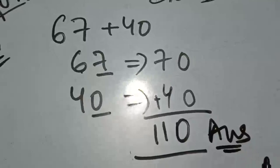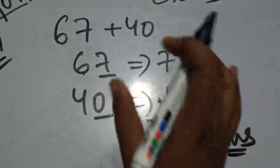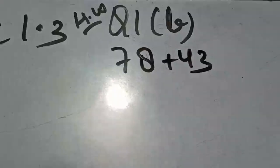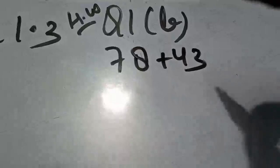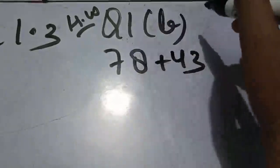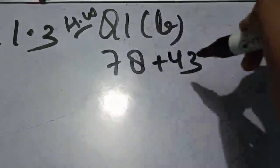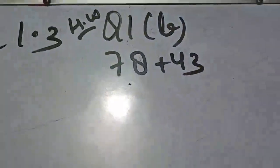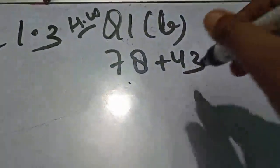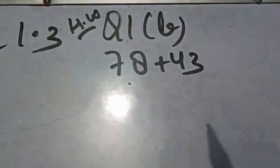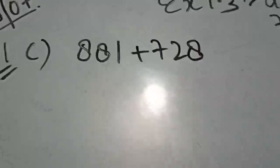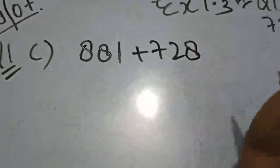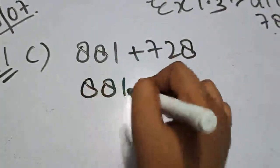بہت easy ہے — بس آپ underline کرنا سیکھ گئے تو سارے questions کر لیں۔ Question number 1 B part is your homework۔ 78 plus 43 nearest tens کرنا ہے — ضرور try کریں۔